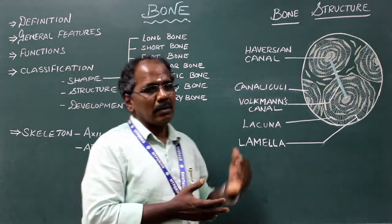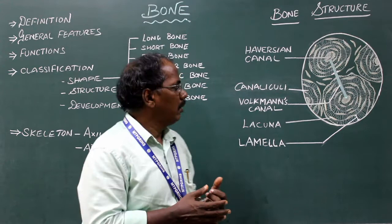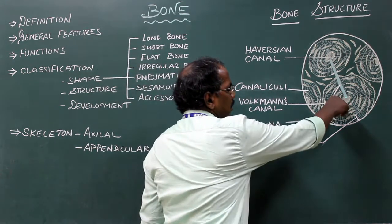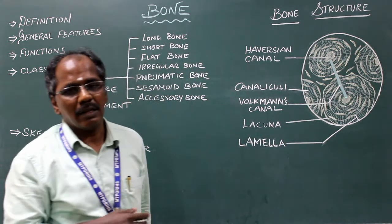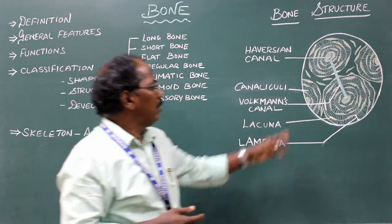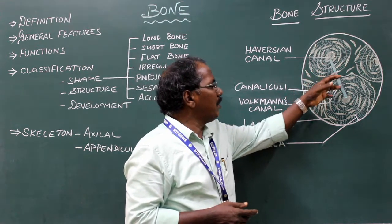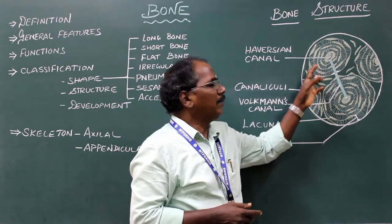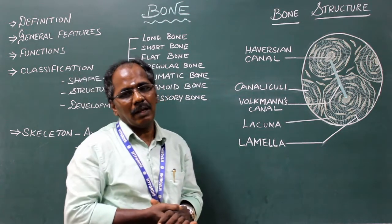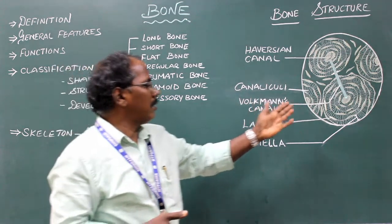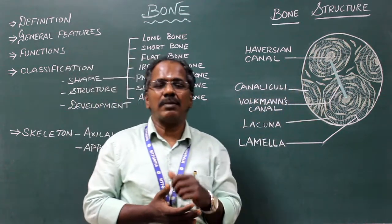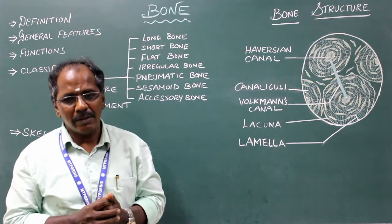The lamellae of bone are of three types. One is concentric lamellae — these are the circular or concentric lamellae present around the Haversian canal. Number two is interstitial lamellae — these are remnant lamellae present in the bone. The third is circumferential lamellae, which forms the circumference of the entire bone. These are the three types of lamellae present in the bone. Thank you.